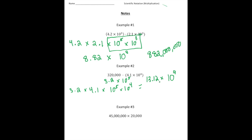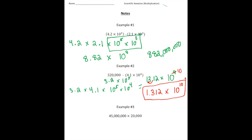Now we're not quite done, because remember scientific notation requires this number to be greater than or equal to one and less than 10. So in order to fix that, I'm going to move this decimal one spot to the left, making that number smaller. And because I made that smaller, I'm going to make the exponent larger. So our answer is going to be 1.312 times 10 to the tenth power.